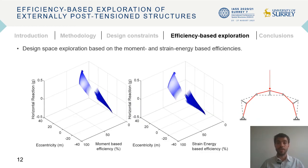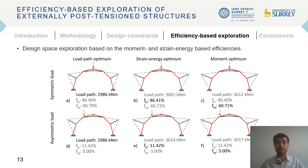However, the load path only provides information on the efficiency of the structure under permanent loads. It is also interesting to analyze the structural efficiency under live loads. This can be done with the moment-based or strain-energy-based efficiencies. The figure on the slide shows the efficiency of an 18-meter span arch under a point load at mid-span. The trends observed are similar to those obtained with the load path, and the optimal configurations only differ slightly. Trends are also similar between the different definitions of efficiency when the struts are oriented to achieve maximum efficiency, with only slight variations in the geometry of the optimal configurations for different definitions of efficiency and locations of the loads.